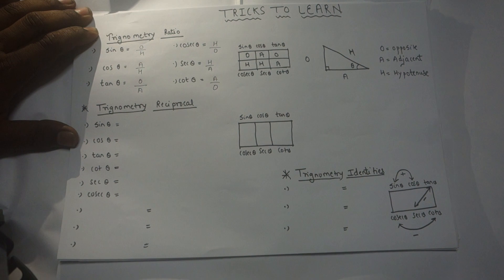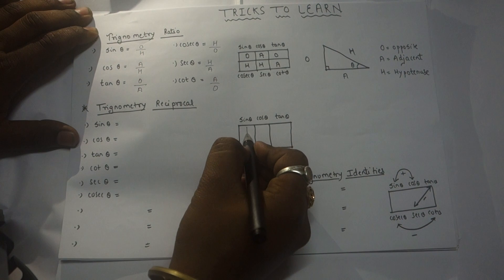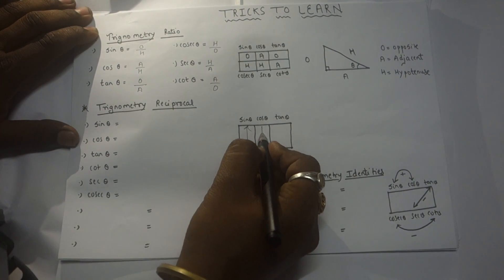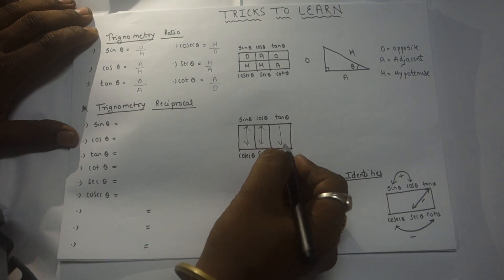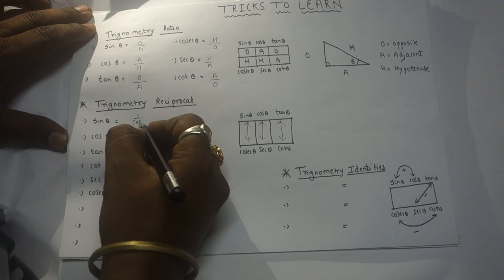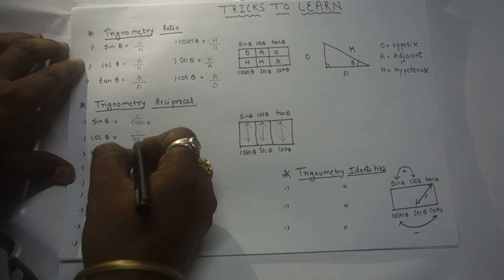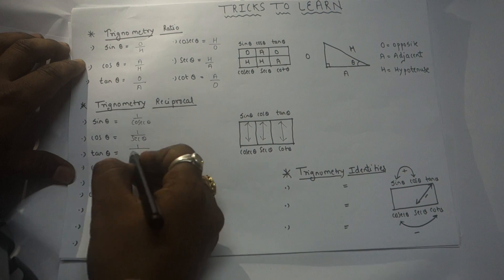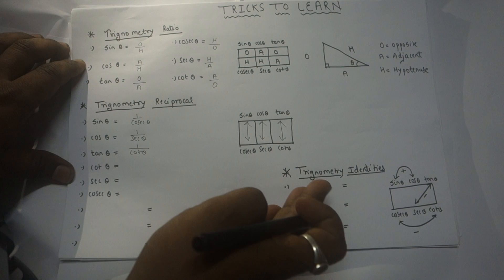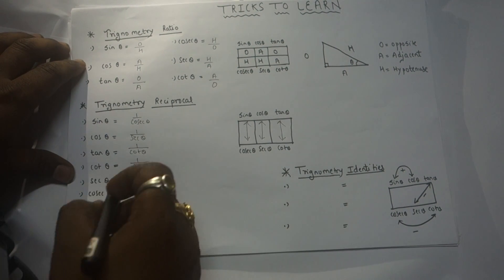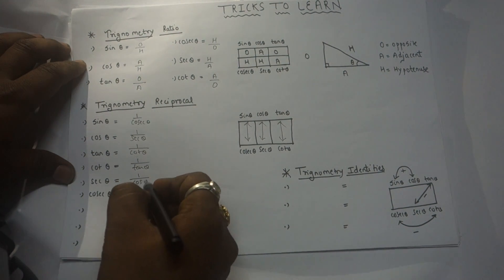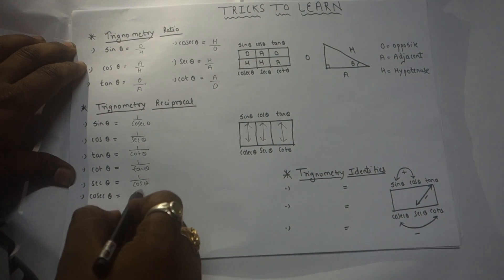Now move on to trigonometric reciprocals. Reciprocal means one upon. The reciprocal of sin is cosec and cosec is sin; cos is sec and sec is cos; tan is cot and cot is tan. So sin equals one upon cosec theta; cos equals one upon sec theta; tan equals one upon cot theta; cot equals one upon tan; sec equals one upon cos; and cosec equals one upon sin.